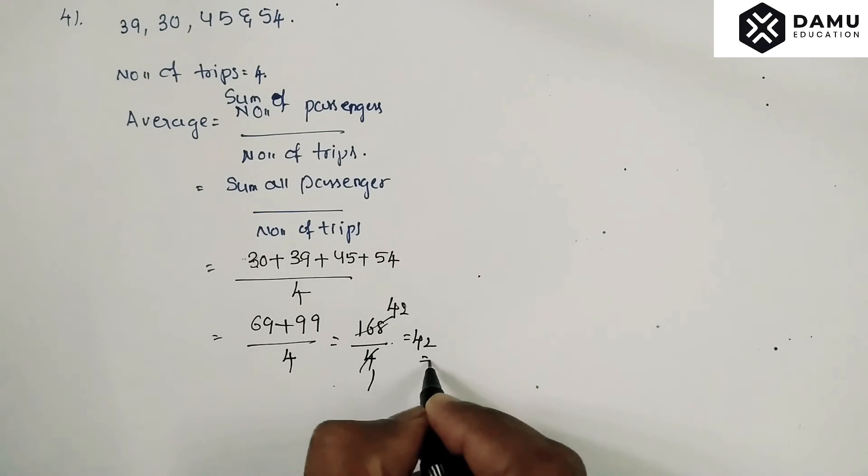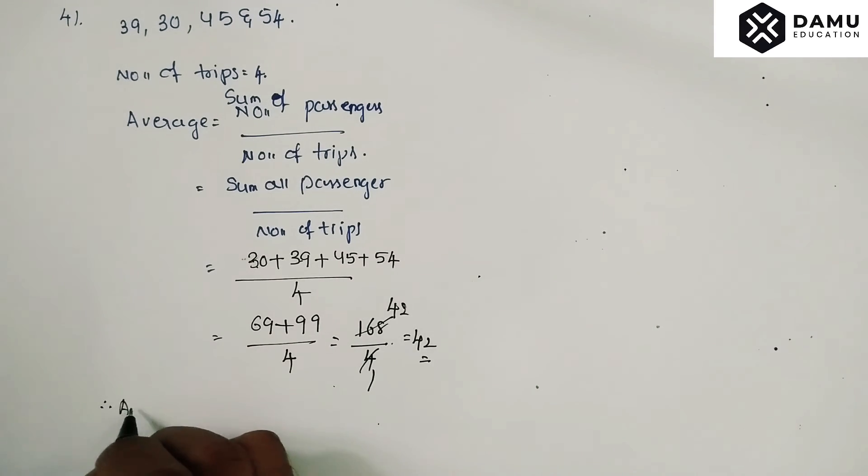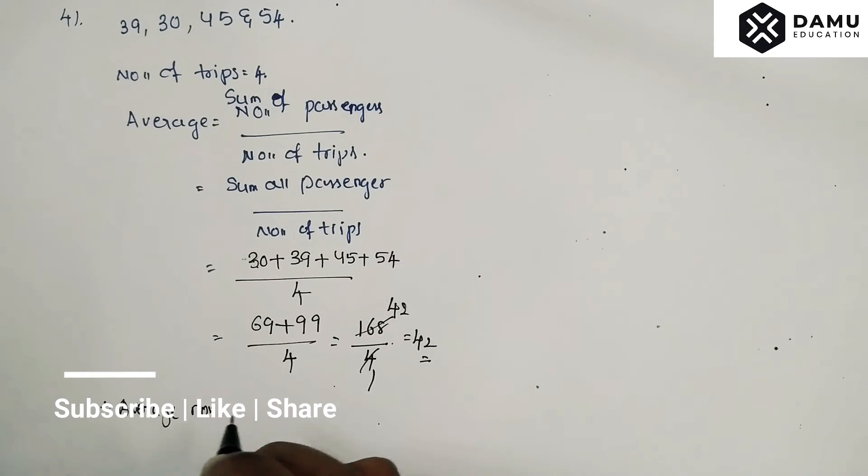4 into 4, 4 into 4 again, so 42. So the average number of passengers traveled per trip.